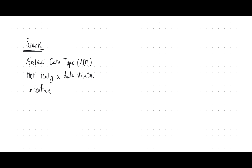The only thing we talk about is the interface — the operations that a stack offers to the user and the behavior of those operations. No specific implementation is discussed when we talk about an abstract data type, which means that an abstract data type can be implemented in different ways.